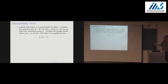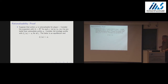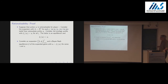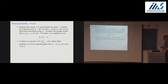We consider the strategy profile where if your signal is a-j, you choose action a-j. This is an equilibrium by construction: you always have the belief that exactly rationalizes your play because that's how we defined the non-common-prior expansion. So we've constructed an expansion and an equilibrium, meaning in particular that action a-i is played at some signal — which is what our theorem required.